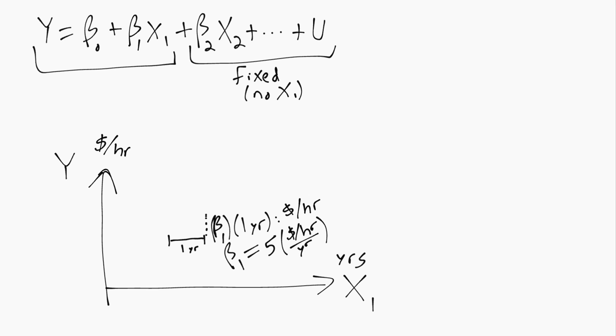So sometimes those units look a little funny like we have hours and years in the same term but it should all work out if you think about multiplying beta 1 times x1. And then the other feature of this linear in variables setting is that it's the same slope regardless of the starting point of x1. So it's just always 5 more or however many more dollars per hour every time we move to the right by one unit. It doesn't change.